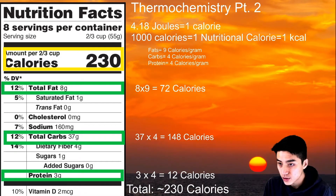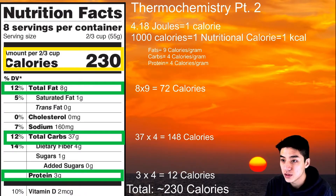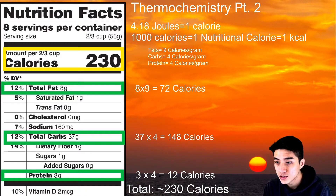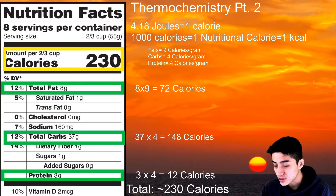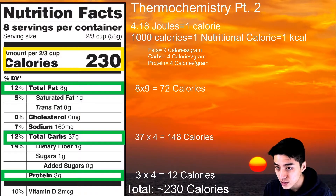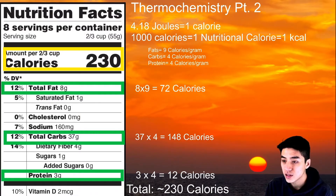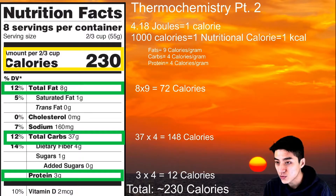In part 1, you learned that 4.18 joules is equal to 1 calorie — those are just two different units of energy. What you also have to understand in part 2 is that 1,000 little-c calories is equal to 1 nutritional calorie, which is the same as 1 kilocalorie.